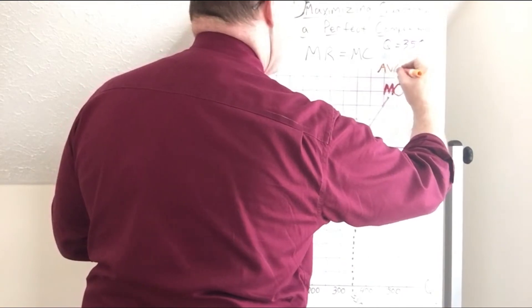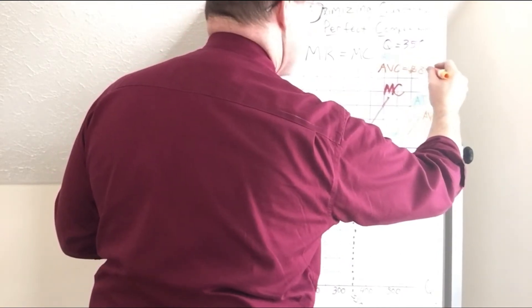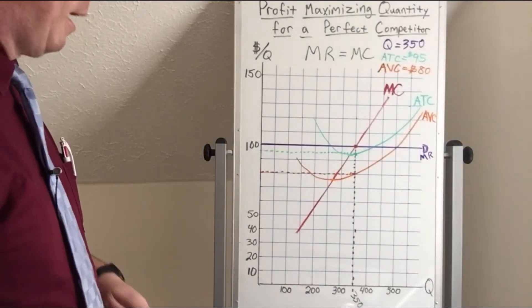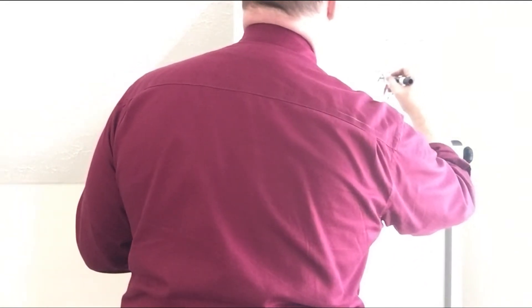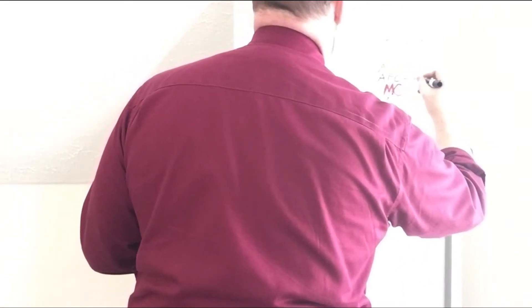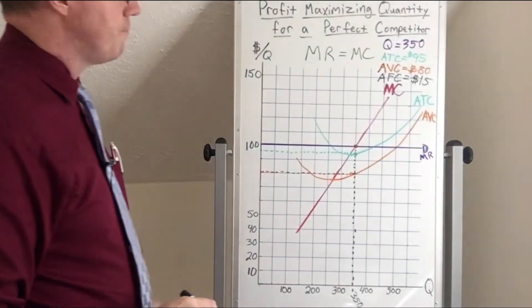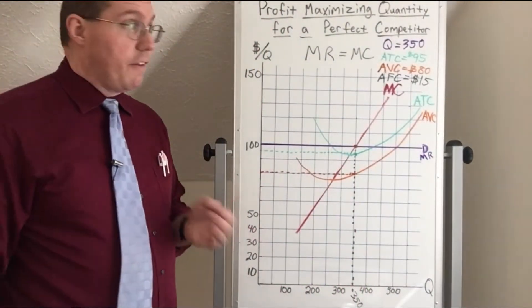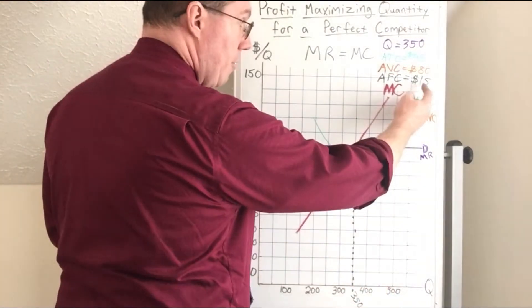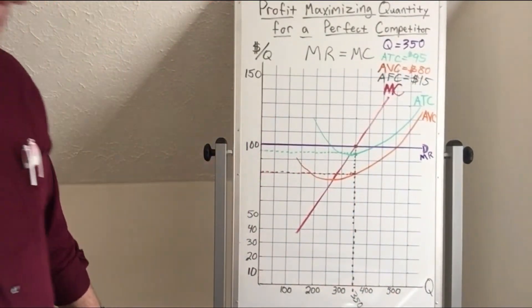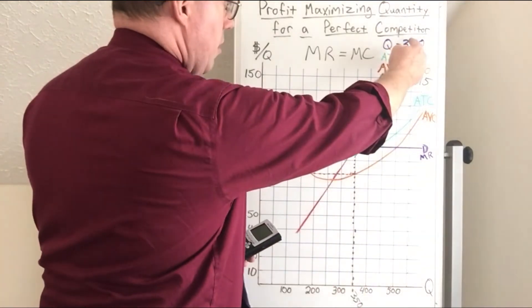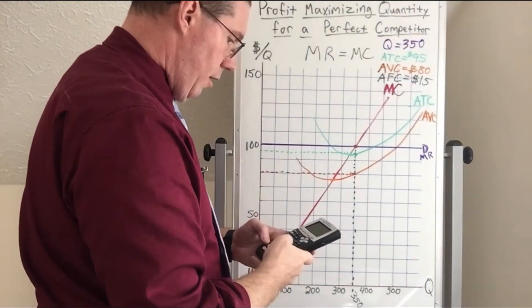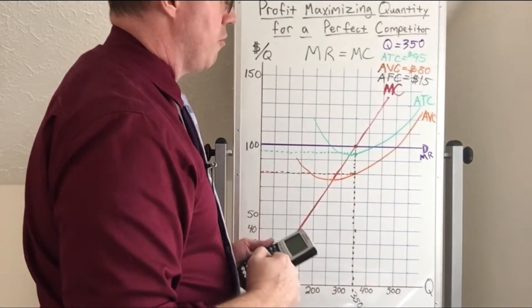Average variable cost for this company is going to be $80 per unit. Now we can identify the average fixed cost by doing average total cost, $95, minus average variable cost, $80. Therefore AFC — average fixed cost — is going to be $15 per unit. We can then multiply to find fixed cost for the company: 350 units times $15 gives us fixed costs of $5,250.